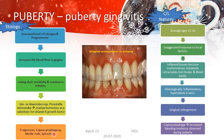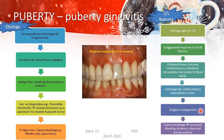To differentiate gingivitis from pubertal gingivitis: this condition occurs at an average age of 11 to 14 years. Patients show an exaggerated response to local factors, and the inflamed tissue is erythematous, lobulated, retractable, feels tender, and bleeds easily. These five conditions in an 11-to-14-year-old girl should trigger the idea of pubertal gingivitis. Histologically, inflammatory hyperplasia and sometimes gingival enlargement may be present. Studies have shown that the increased bleeding tendency during puberty is due to the bacterium Capnocytophaga.